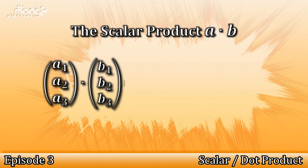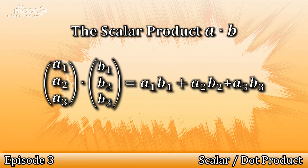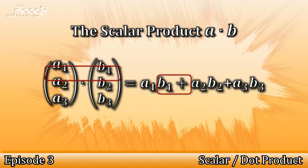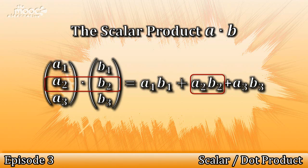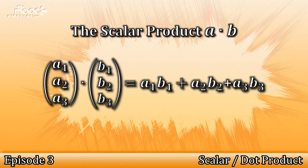So, A dot B is equal to A1, A2, A3 dot B1, B2, B3, which is then equal to A1 B1 plus A2 B2 plus A3 B3. So, you're multiplying the top numbers, and adding it with multiplying the middle numbers, and then adding that to multiplying the bottom numbers, to give you the whole result there on the right hand side.